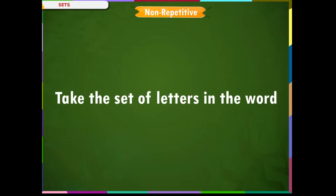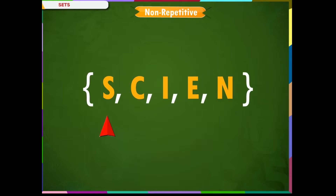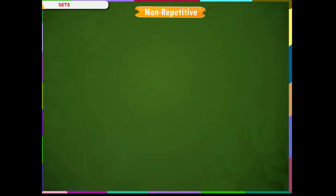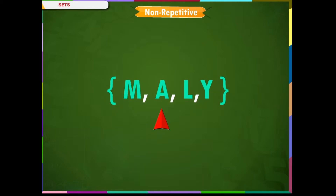Non-repetitive. Take the set of letters in the word 'science'. It can be written as {S, C, I, E, N} within curly brackets. The letter C should not be repeated in the set. Let's take one more example. Take the set of letters in the word 'Malayalam'. It should be written as {M, A, L, Y} within curly brackets. Though there are 9 letters in this word, only M, A, L, Y are taken; others are just repetitions of the same letters.